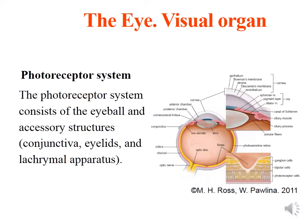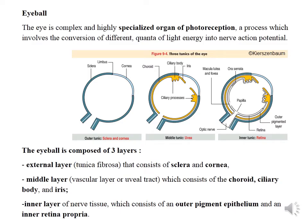Today we discuss the photoreceptor system, which consists of the eyeball and accessory structures. The eye is a complex, highly specialized organ of photoreception. The eyeball is composed of three layers: external, middle, and inner. The external layer consists of sclera and cornea, shown here in blue. The middle layer consists of choroid, ciliary body, and iris, shown in yellow. The inner layer consists of outer pigment epithelium and inner retina propria, shown in white.